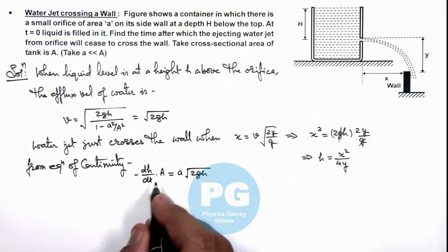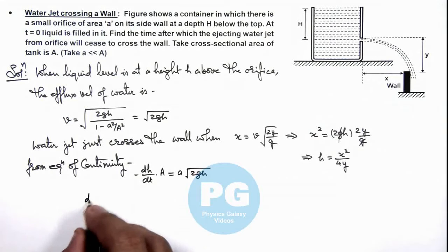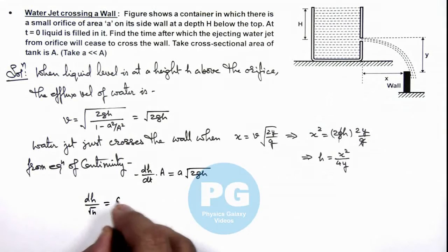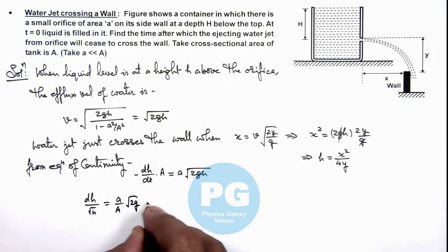So here we are rearranging the terms, this will give us dh/root(h) = (a/A) × root(2g) × dt.